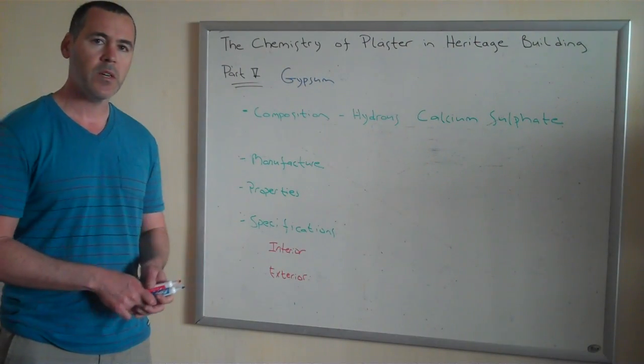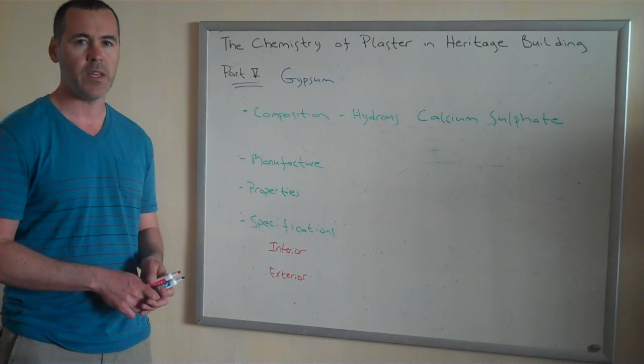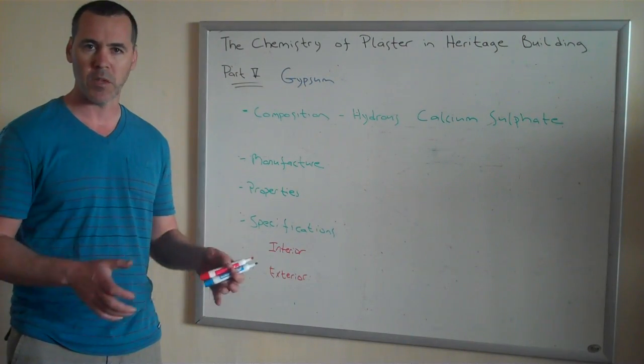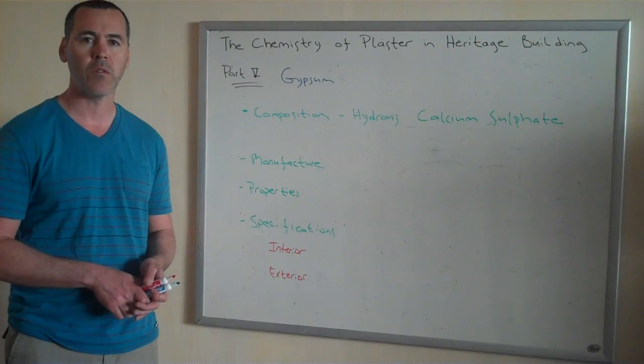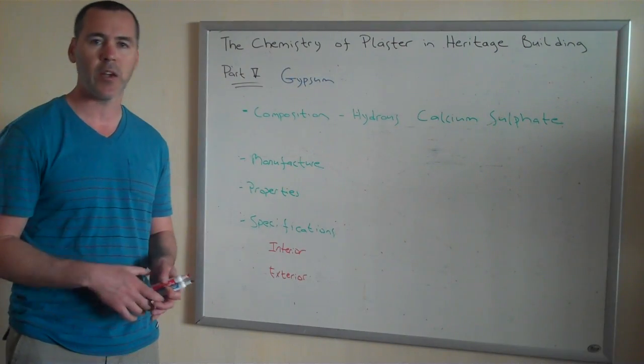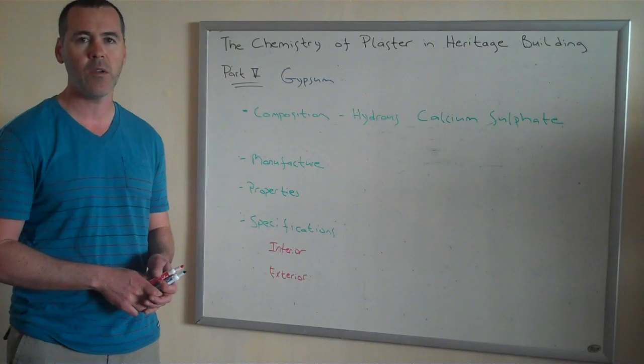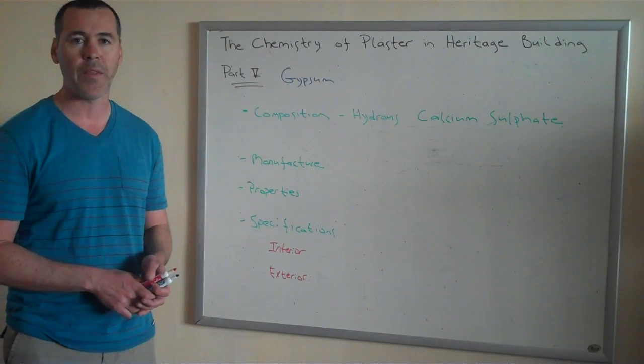What is gypsum? Gypsum is the salt of the calcium family, and it occurs in nature in a couple of different ways. One of those could be the introduction of sulfur through some sort of volcanic activity to limestone, and it'll precipitate as a salt that way.